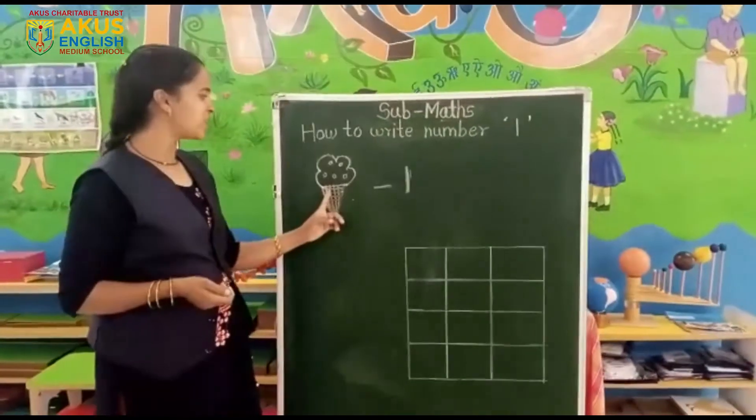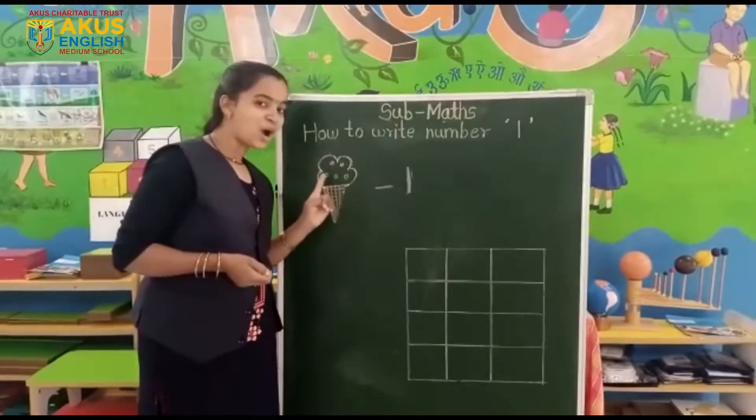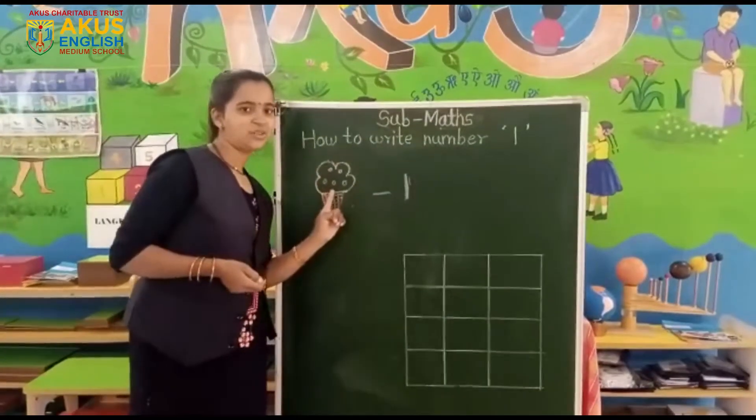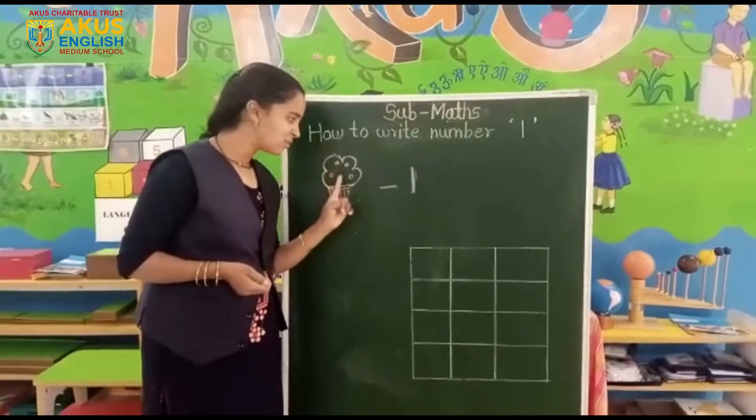First, all of you see here, which is this picture? Ice cream. And how many ice creams are here? Let's count. One. Only one ice cream is here.